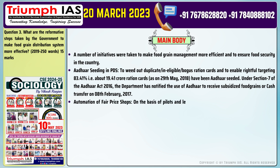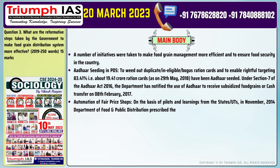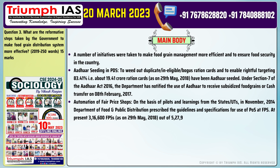Point 3: Automation of fair price shops. On the basis of pilots and learnings from states and UTs, in November 2014 the Department of Food and Public Distribution prescribed guidelines and specifications for use of Point of Sale (POS) devices at Fair Price Shops (FPS). At present, 3,16,600 FPSs out of 5,27,930 have POS devices, as on 29th May 2018.